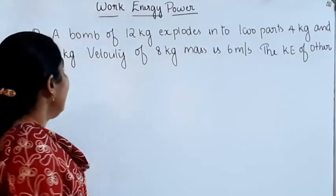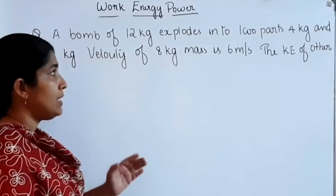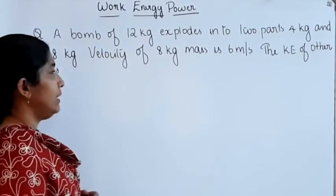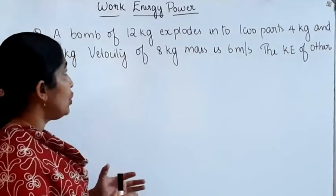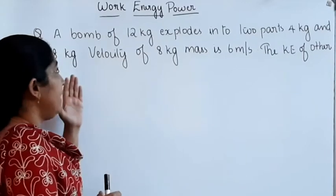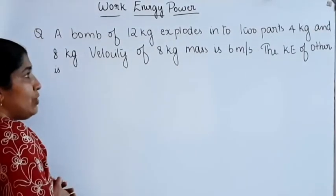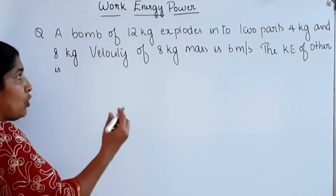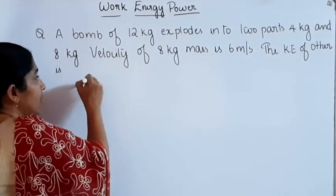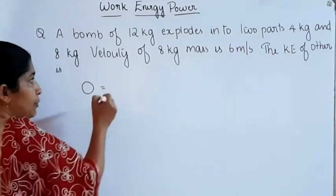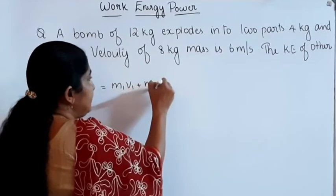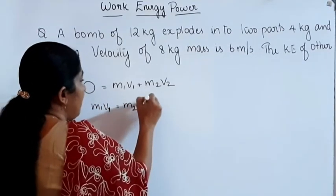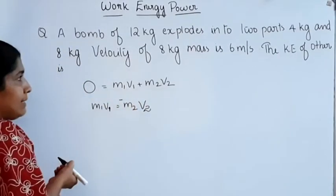Next question: a bomb of 12 kg explodes into 2 parts of 4 kg and 8 kg. The velocity of the 8 kg mass is 6 m/s. We want to find the kinetic energy of the other piece. Applying conservation of momentum, momentum before explosion equals zero. After explosion: M1V1 + M2V2 = 0, so M1V1 = −M2V2. Both pieces have equal magnitudes of momentum but move in opposite directions.